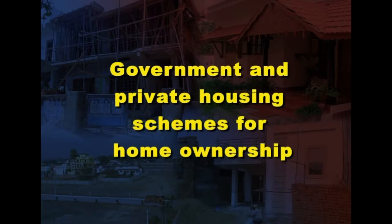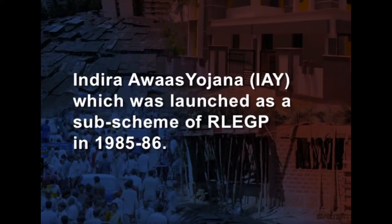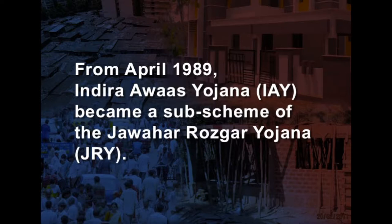Let us now study government and private housing schemes for home ownership. The Government of India has been taking all necessary steps to meet the shortage of rural housing for quite some time. The earliest known initiative was for rehabilitation of refugees immediately after the partition of the country. Rural housing initiatives in their true sense began with the Indira Awas Yojana, which was launched as a sub-scheme of RLEGP in 1985-86. From April 1989, it became a sub-scheme of the Jawahar Rojgar Yojana (JRY). Since 1996, it was delinked from JRY and made an independent scheme.